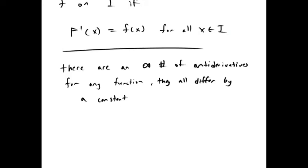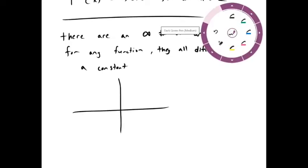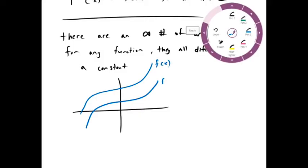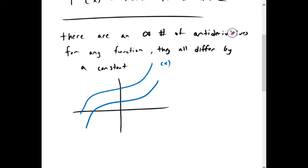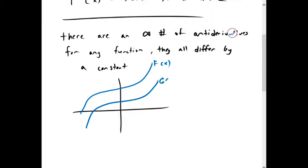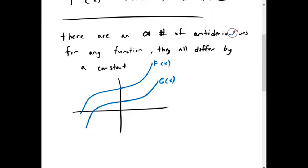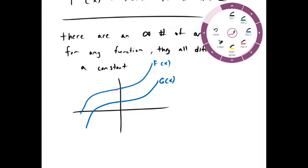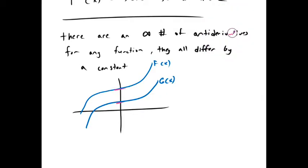The reason that's the case, if you look at this graphically, is if we have function f of x and function g of x. As you can see, the slope of the tangent line of each of these at each x value is the same. The only difference in these functions is that they are shifted up by some constant c.